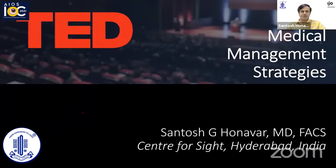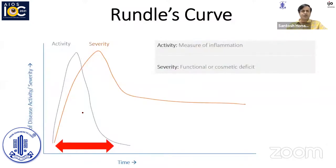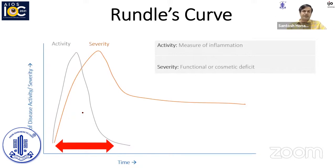I'll be talking about medical management of thyroid disease. Peter has given a very beautiful introduction about the evaluation of activity and severity. Ultimately, we consider thyroid disease like a house on fire. Many patients may not be on the Randall's curve, but that is the most common generalization based on activity and severity. Patients can plot at some point in the curve, and we follow them up over time, and each patient gets his own curve, which will guide us on how to treat them.